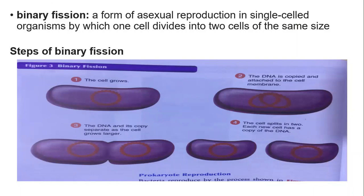The steps of binary fission: first, the cell grows. Then the DNA is copied and attached to the cell membrane. Then the DNA and its copies separate as the cell grows larger. When the cell grows larger, the DNA and its copies separate. Then the cells split in two, and each new cell has a copy of the DNA.